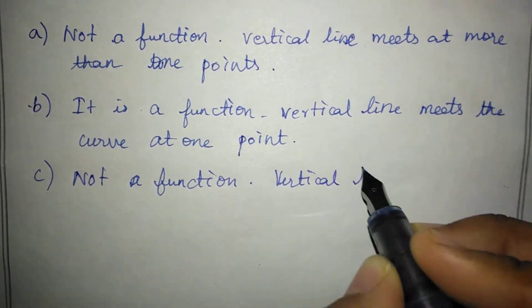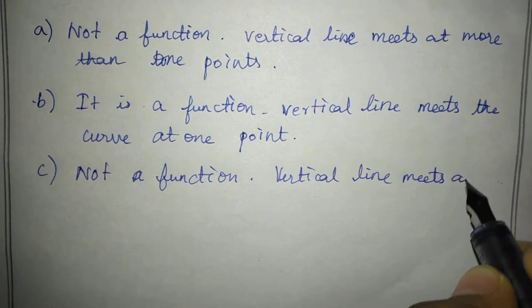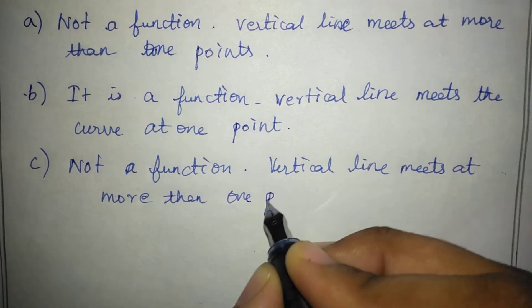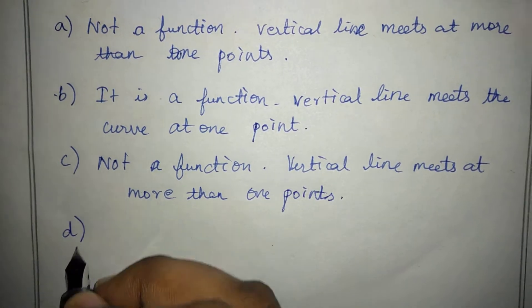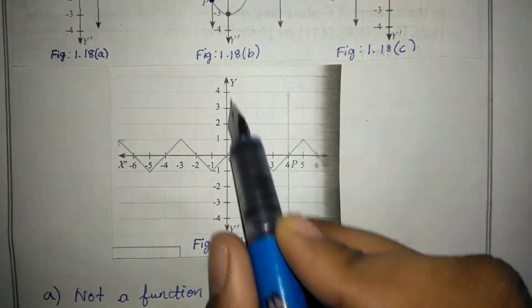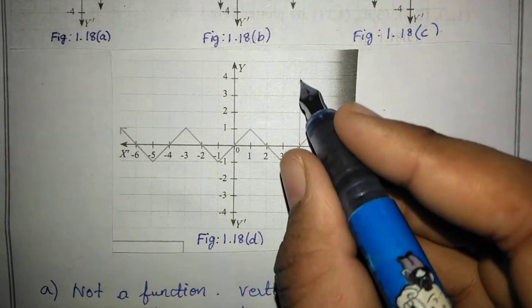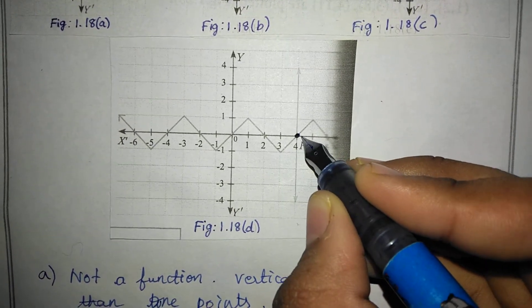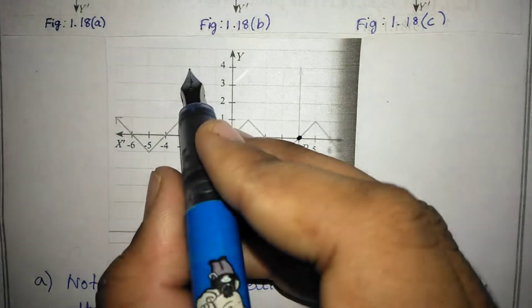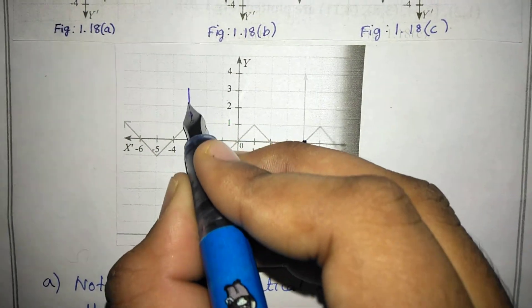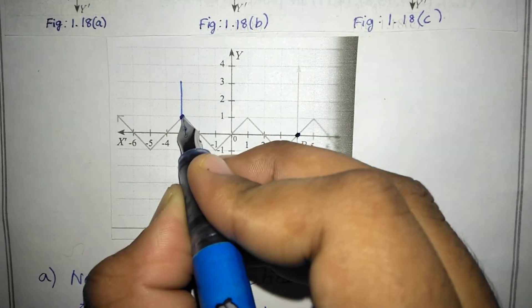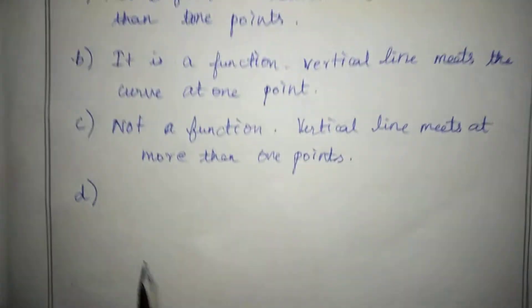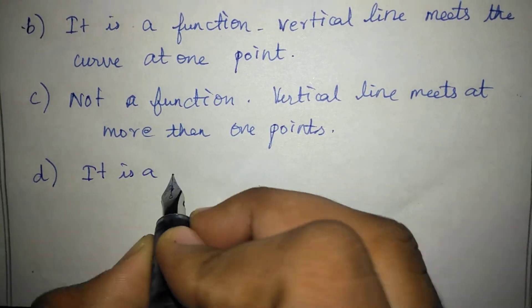The vertical line meets at more than one point. And next, D. If we look at the diagram and drop a vertical line, it meets at one point. So it is a function. D is a function.